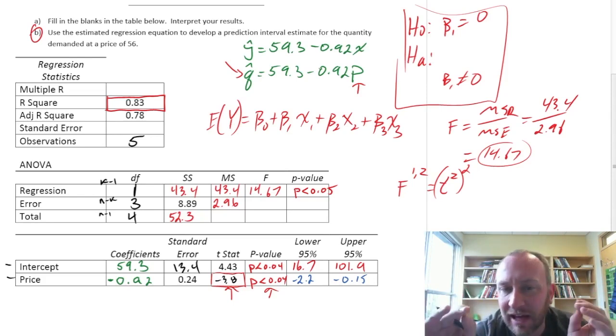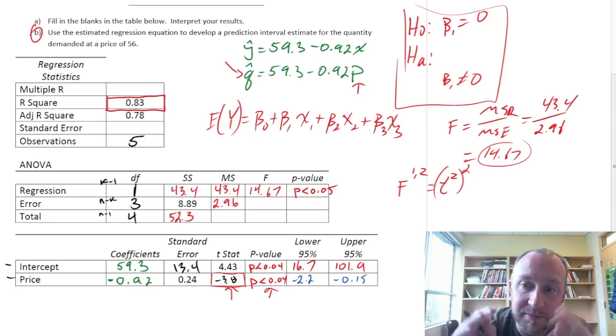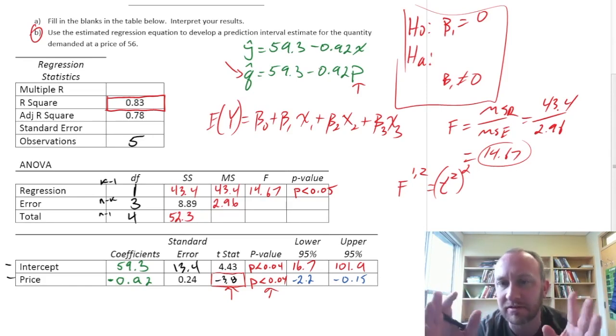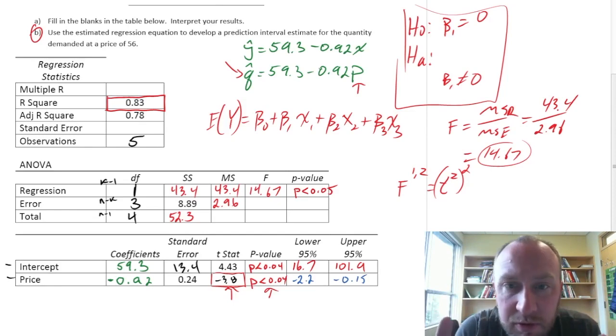So, these tests, the F-test and the test on the slope for a simple linear regression, are exactly the same. They're perfectly redundant. Okay, sorry, let's move on. That was enough about that.